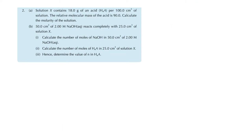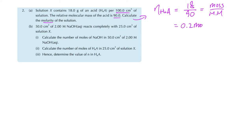The second example: a solution contains 18 grams of acid HₙA per 100 cm³ of solution, and the relative molecular mass is 90. Find the molarity. First, the number of moles of acid = 18 ÷ 90 = 0.2 mol. Then, molarity of HₙA = 0.2 mol ÷ 0.1 dm³ = 2 mol/dm³. That's part A.